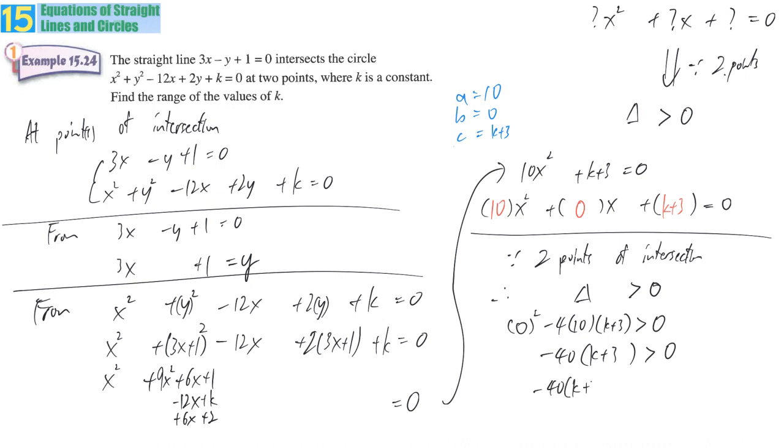I don't want negative 40, so I divide both sides by negative 40. Zero divided by negative 40, but because I divide both sides by a negative, it triggers a change in the direction of the inequality. Therefore k plus 3 is smaller than zero, meaning k is more than negative 3.